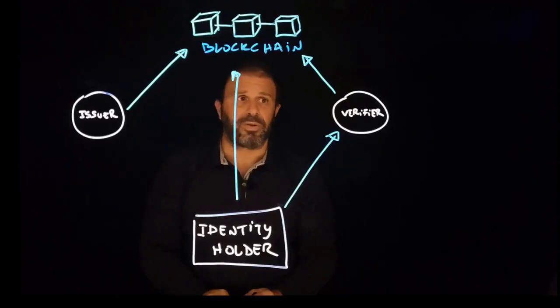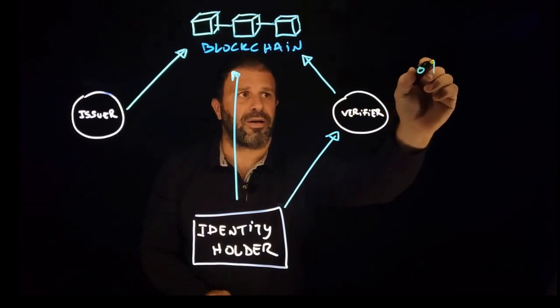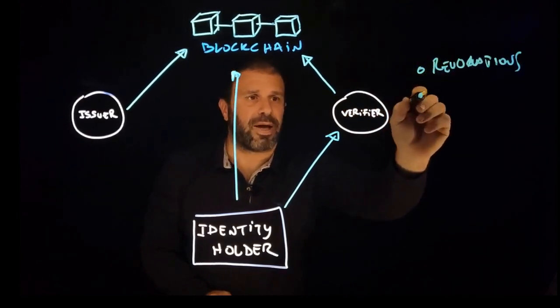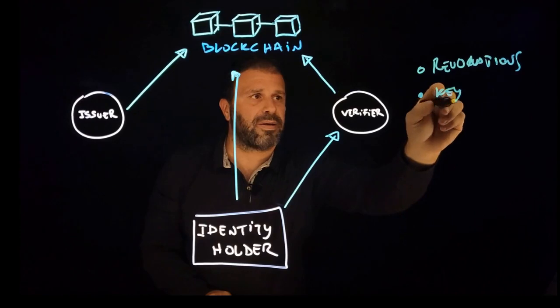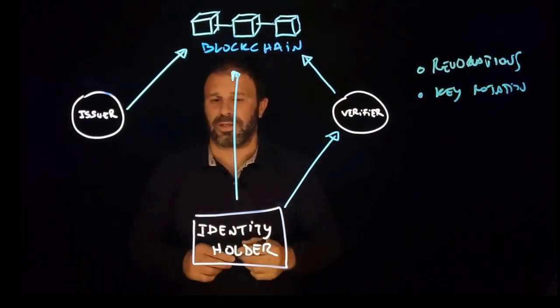What we need to remember, just to wrap it up, the two main cases for the blockchain in Polygon ID are revocations and key rotation or multiple keys.